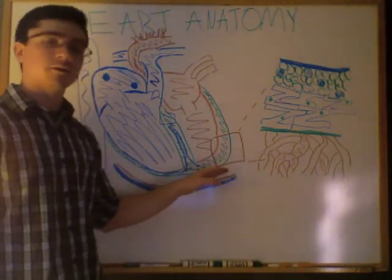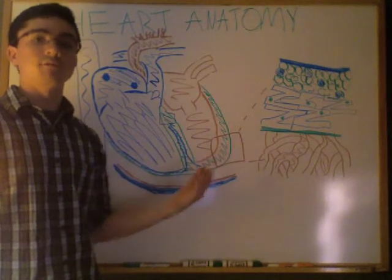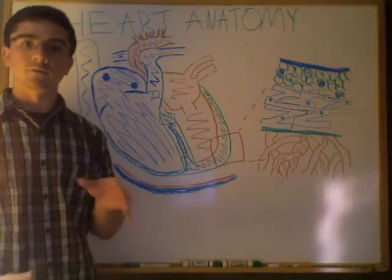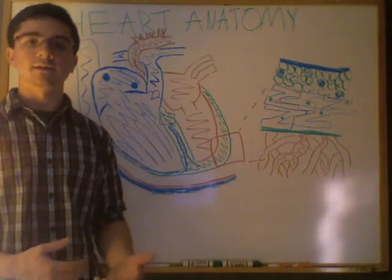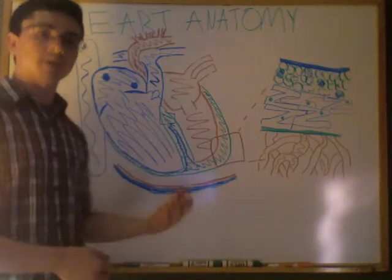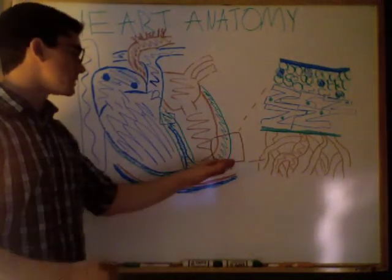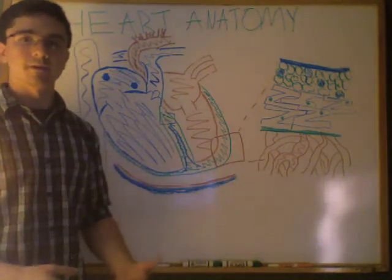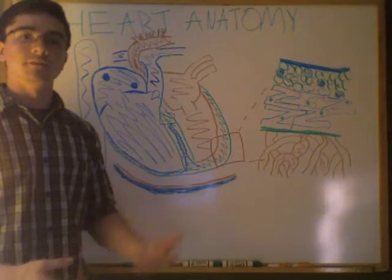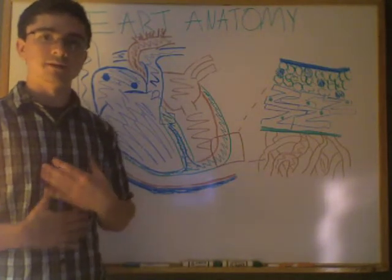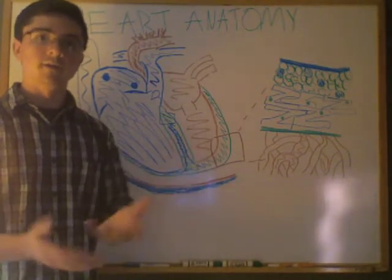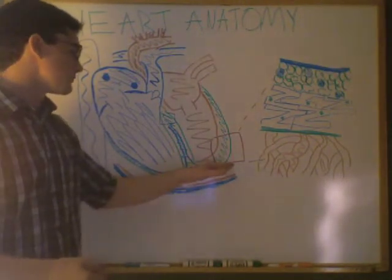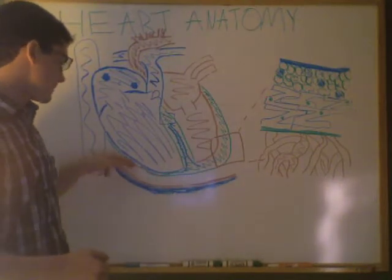More deep to the pericardial cavity, we have the visceral pericardium. The visceral pericardium actually has another name depending on the context. When we're talking about the pericardium, we call this the inner layer of the pericardium and the outer layer of the heart the visceral pericardium. Viscera means internal organs; pericardium means around the organ — which in this case is the heart. So the visceral pericardium is right along the heart.